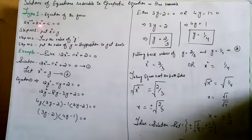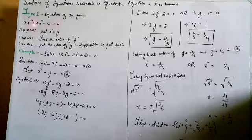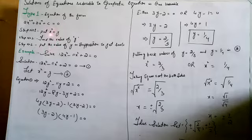Step one: putting x^n = y, then we will get a·y² + b·y + c = 0. From this new equation in terms of y, we will get the value of y. Finally, we will put that value of y back into the supposition equation x^n = y to get the roots of the given equation.